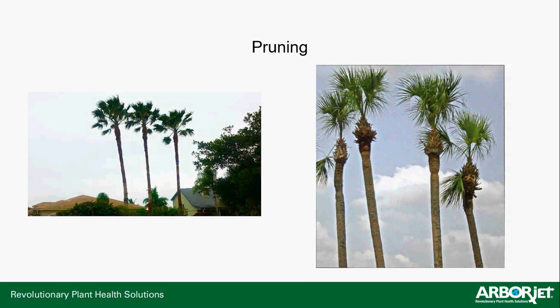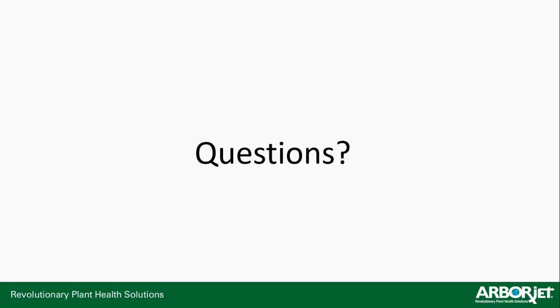On pruning: you can see the Washingtonias on the left showing what a properly pruned palm looks like versus the ones on the right that were over-pruned. I like to see pruning no more than the nine-o'clock and three-o'clock position on a clock — don't take any fronds above the nine-and-three line. The ones on the right were pretty much butchered. With that, we'll open it up for questions.